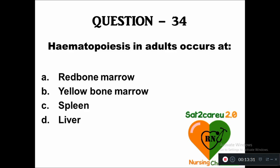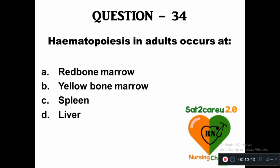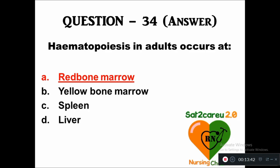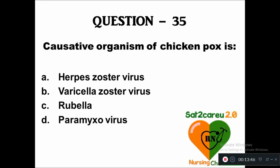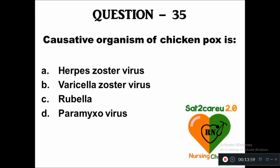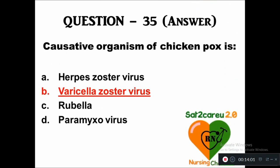Question 34: Hematopoiesis in adults occurs at — option A: red bone marrow, B: yellow bone marrow, C: spleen, D: liver. Hematopoiesis in adults occurs at red bone marrow. Question 35: The causative organism of chickenpox is — option A: herpes zoster virus, B: varicella zoster virus, C: rubella, D: paramyxovirus. The right answer is varicella zoster virus causes chickenpox.